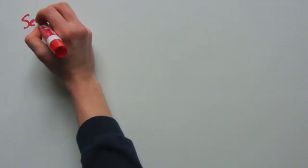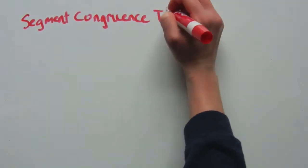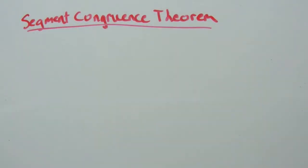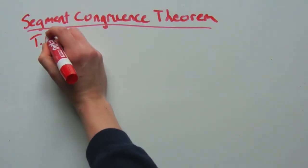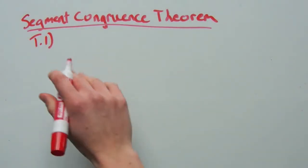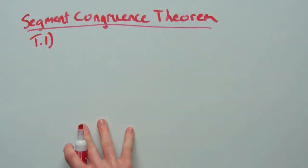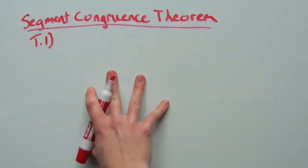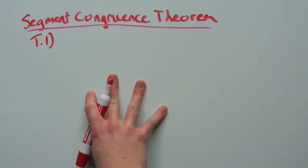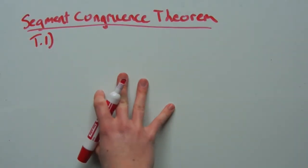In this video, I'm going to introduce you to our first theorem, the Segment Congruence Theorem. Just like I have a certain labeling for my postulates, I'm going to have a certain labeling for my theorems. So I'm going to start with the first theorem as T1, and then as we go through more theorems, it'll be T2, T3, and so on, until we finish all the theorems in geometry. But for now, the Segment Congruence Theorem.